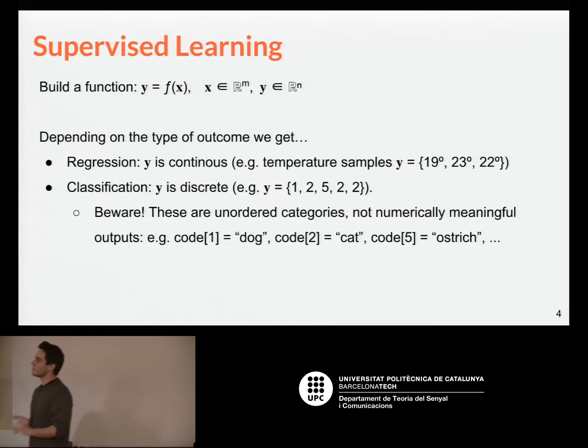Now, from this mapping function, depending on whether we have continuous or discrete outputs in the y, in the mapping, we call this regression or classification. Regression would mean maybe predicting temperature, and classification predicting categories like words, or classes like, what do we have in this image, dogs, cats, what's said, hello, goodbye, things like that.